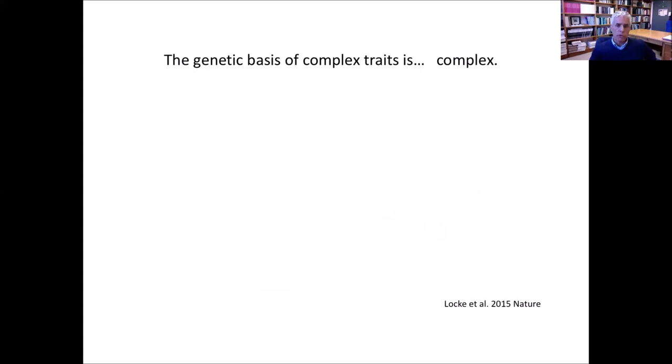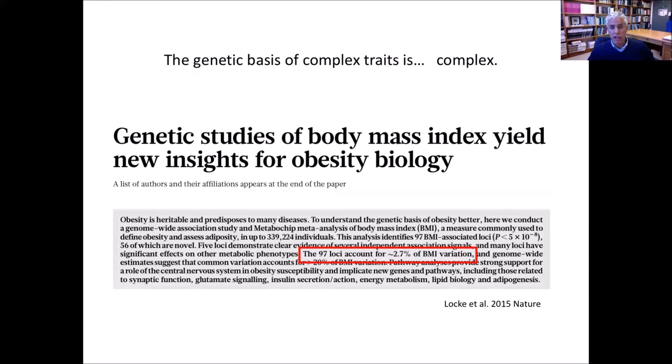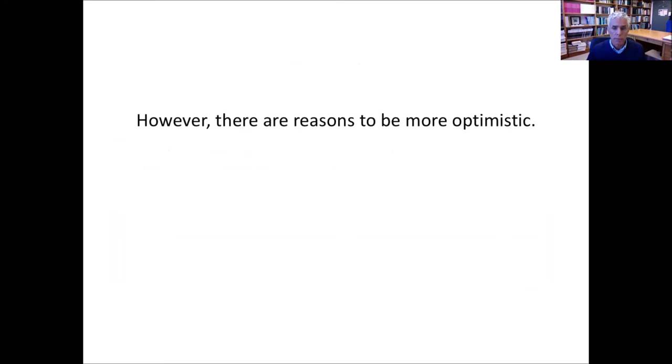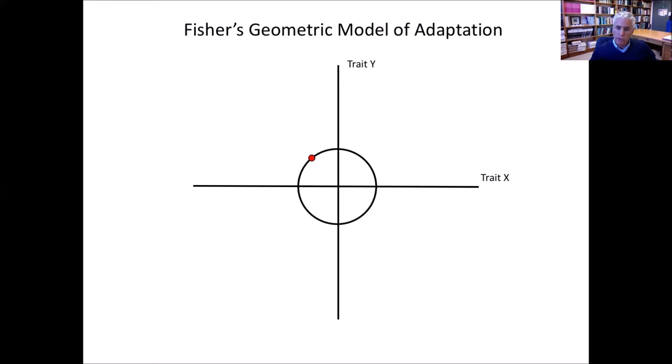The genetic basis of complex traits is really a challenging problem. From GWAS studies, results show there are 97 loci that account for BMI in humans, well-replicated in multiple studies. Everyone can agree that these loci seem to contribute to BMI, and yet collectively they only account for a little over 2.5% of the variation in natural populations. This is a challenging problem and has led some people to suggest it's really intractable. But I think there are reasons to be more optimistic, and this thinking motivates a lot of what we do.